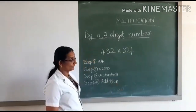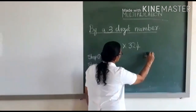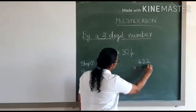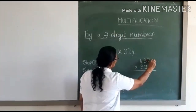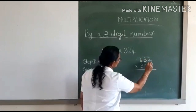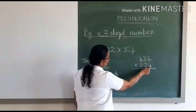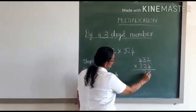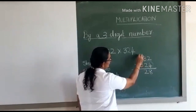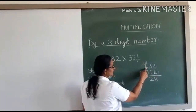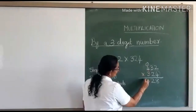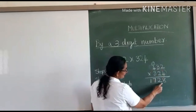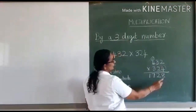Shall we go and learn it? 432 into 324. First, let us multiply this number with four. Four into two is eight. Four into three is twelve — carry over. Four into four is sixteen, and sixteen plus one gives seventeen. So, four hundred and thirty-two into four is equal to one thousand seven hundred and twenty-eight.